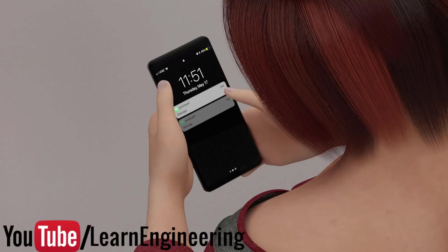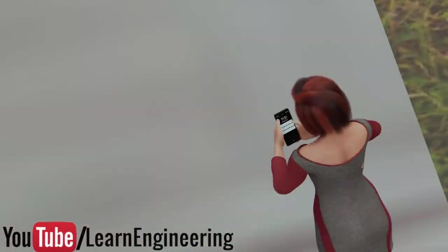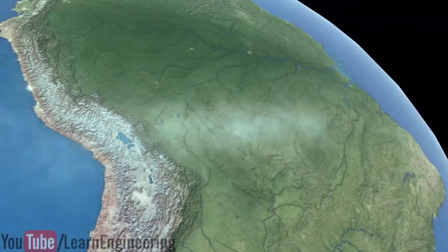Have you ever thought about how you get emails or any other information from any corner of the world within a blink of an eye? This has been made possible by a network of cables which are laid under the ground and below the ocean.